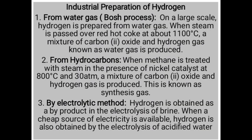How do we prepare hydrogen in the industry? We have three methods as well. The first is from water gas, which is what we call the Bosch process. On a large scale, hydrogen is prepared from water gas when steam is passed over red-hot coke. Steam is water that has been boiled. You pass steam over the coke at about 1100 degrees Celsius. A mixture of carbon monoxide and hydrogen gas, known as water gas, is produced.